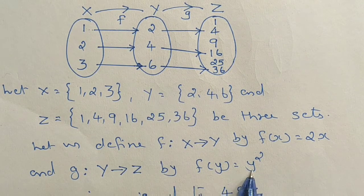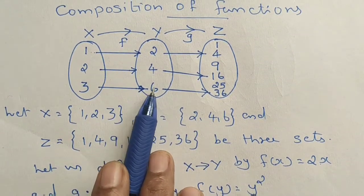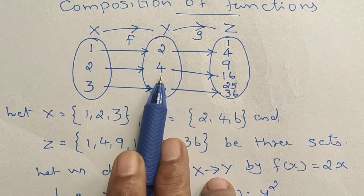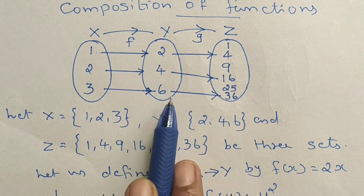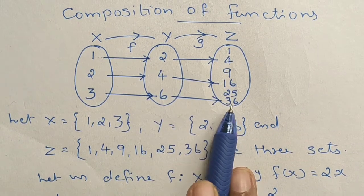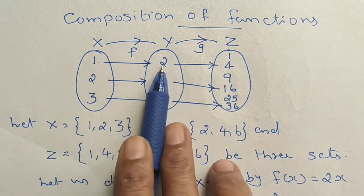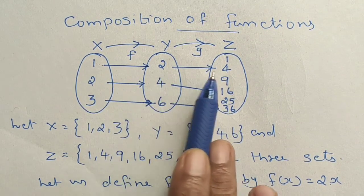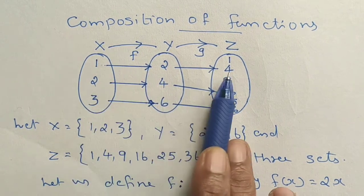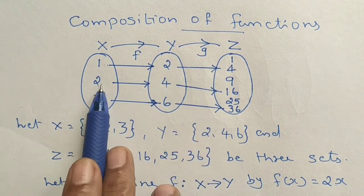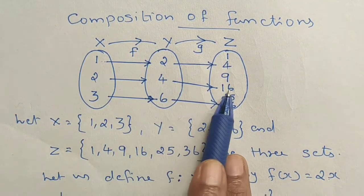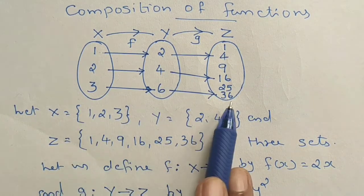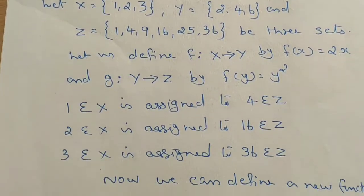We're looking for y. The function of x is a square function. When 2 is squared we get 4. We have a related function: 2 maps to 4, 3 maps to 6, 6 maps to 36. Then 3 maps to 36.